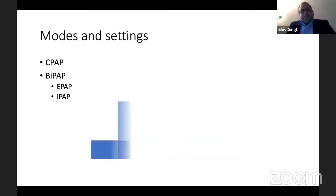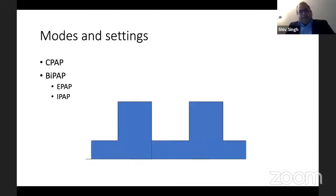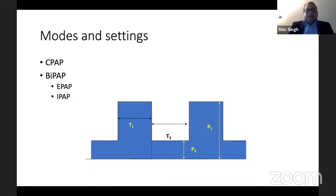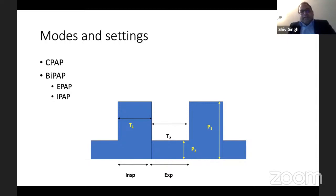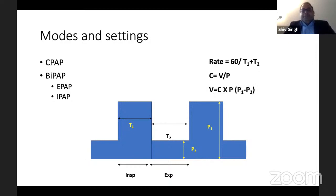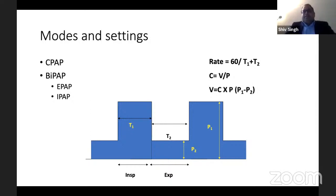With BiPAP, you have a continuous posterior airway pressure and intermittently the pressure is increased — P1 and P2, with times T1 and T2. When the pressure goes up there is inspiration, and during EPAP there is expiration. The rate is normally taken as 60 divided by T1 plus T2. If compliance is known, the volume delivered is compliance multiplied by the pressure difference P1 minus P2. Pressure support ventilation is another mode.